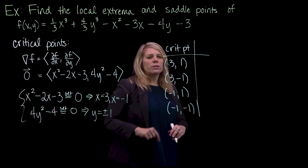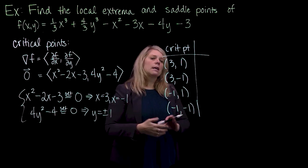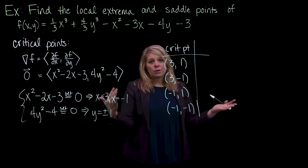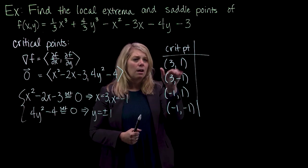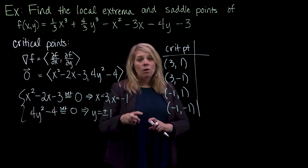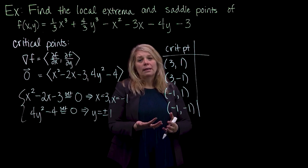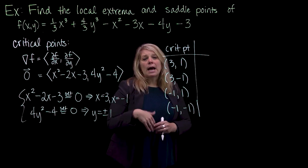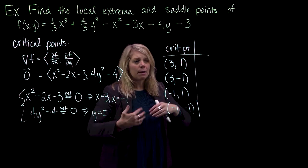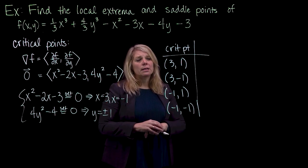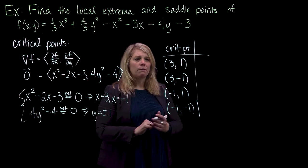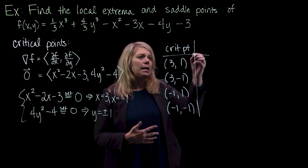To classify what's happening at these points, in Calculus 1 you looked at the sign of the derivative on either side of the critical point. The issue for multivariable functions is you have infinitely many sides around that critical point. You might have used a second derivative test in Calc 1, looking at the concavity at the critical point — that's essentially what we'll use here. We can't use a first derivative test because we have infinitely many directions to consider.